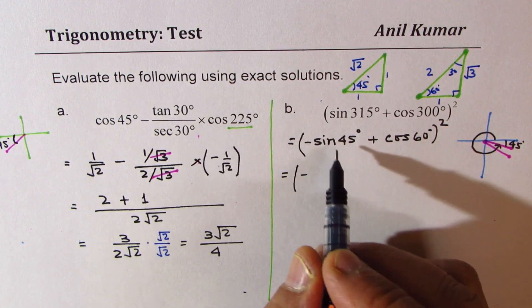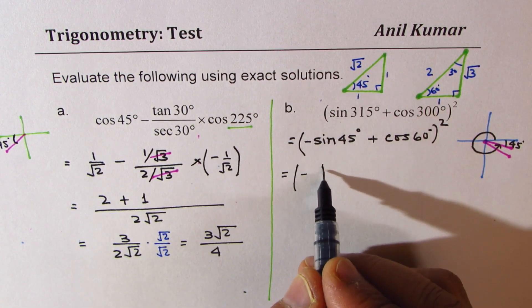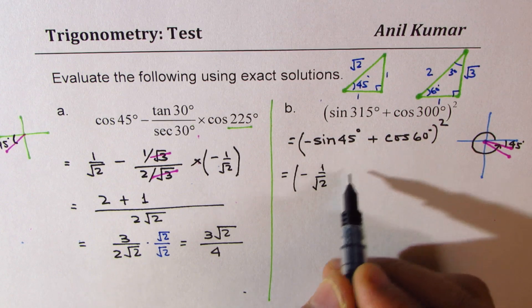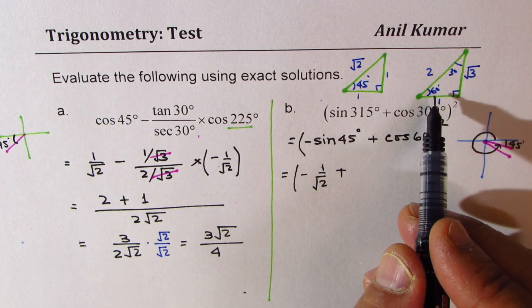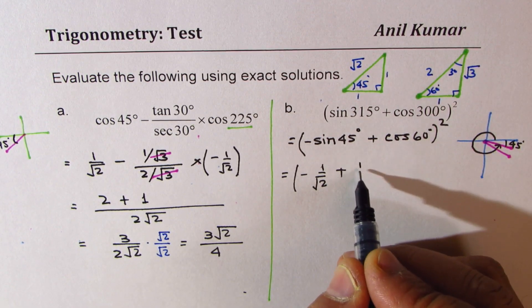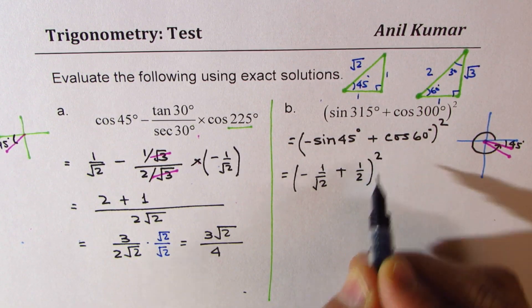Now minus sine of 45 means 1 over square root 2 plus cos of 60 degrees means 1 over 2 whole square.